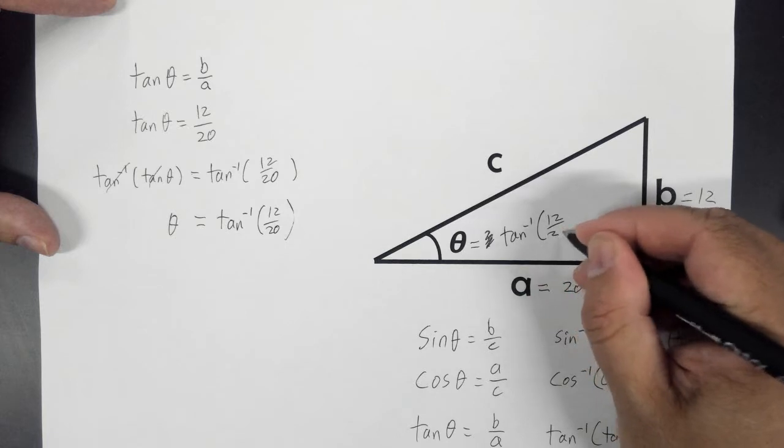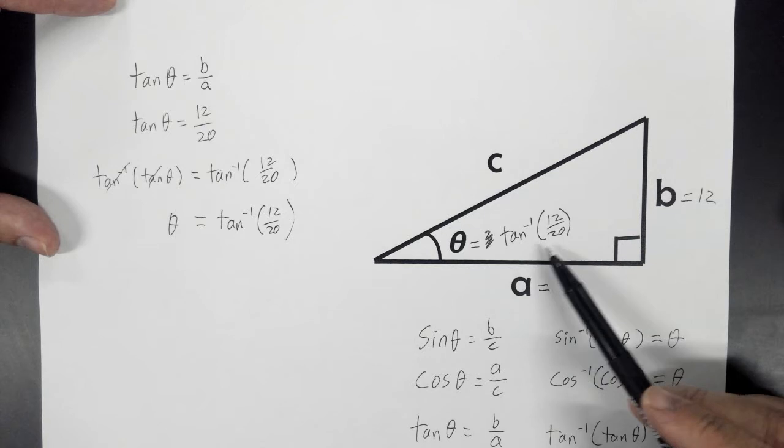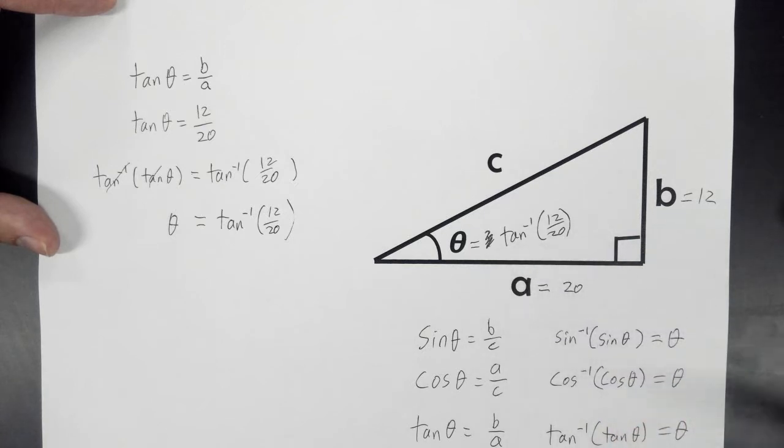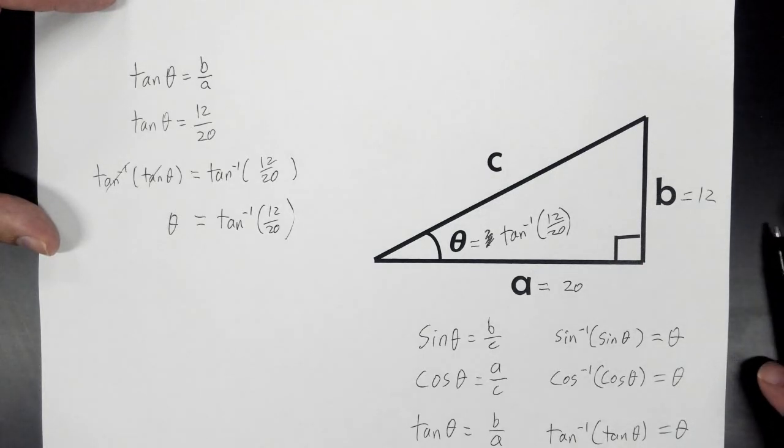And on one of our tests, this would be fine, an acceptable answer. But if you had a calculator, this is something you could actually find the actual angle, right? So that's an example of how to use inverse functions to find the angle in the triangle.